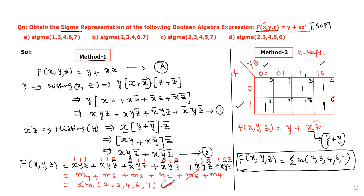Now let us check whether Method 1 and Method 2 give the same answer. Yes — Method 1 gives 2, 3, 4, 6, 7 and Method 2 also gives 2, 3, 4, 6, 7. So option B, σm(2, 3, 4, 6, 7), is correct.